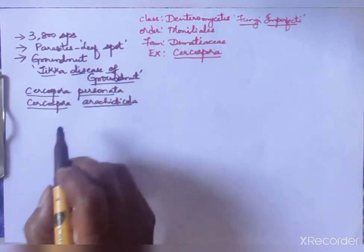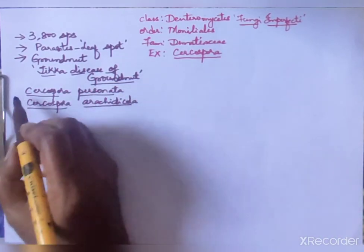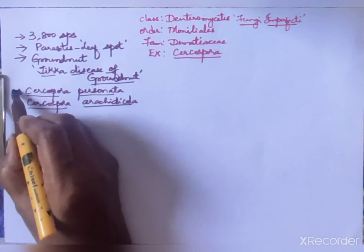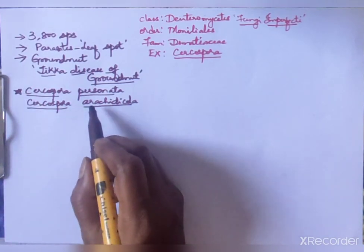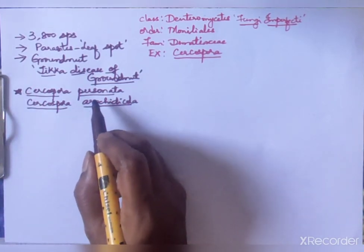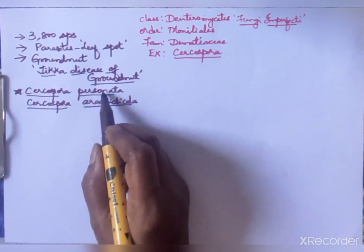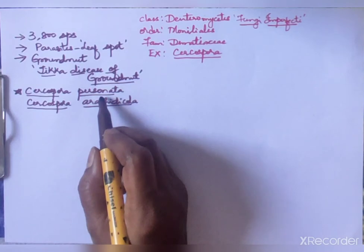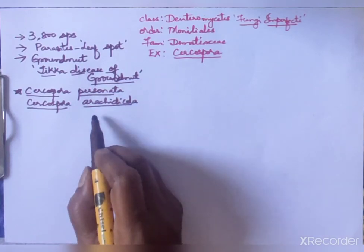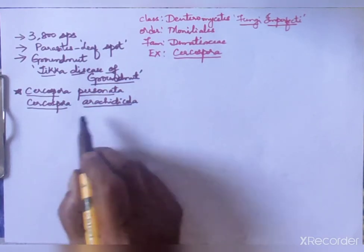Cercospora personata is more common in India and it causes much more damage to the plants compared to Cercospora arachidicola.